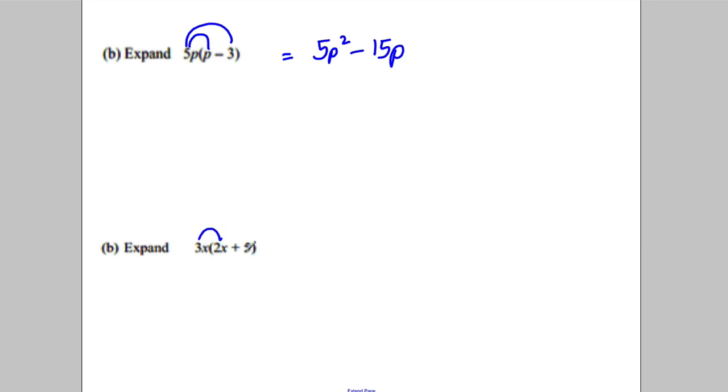3X multiplied by 2X. Well, 3 multiplied by 2 gives me 6. X multiplied by X is X squared. 3X multiplied by positive 5 is positive 15X. And that's it for this video. Hope you found it useful. See you next time.